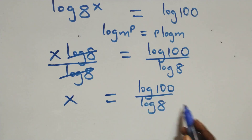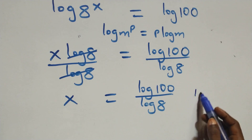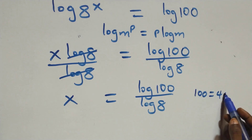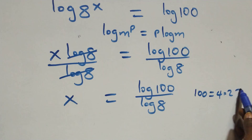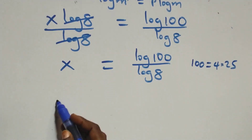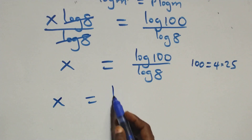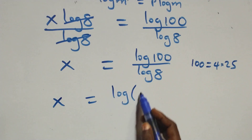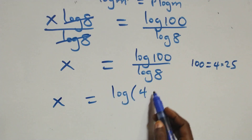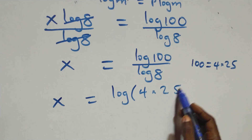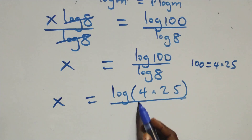In the next step, 100 can be expressed as 4 times 25. Which implies here we have x equals to log of 4 times 25 over log 8.